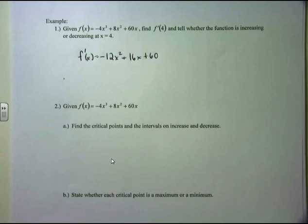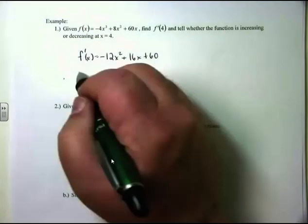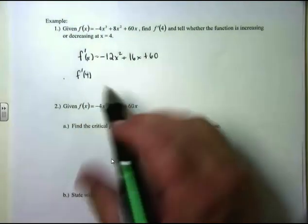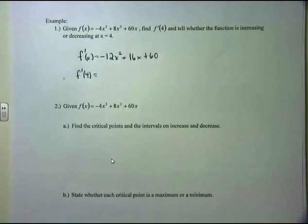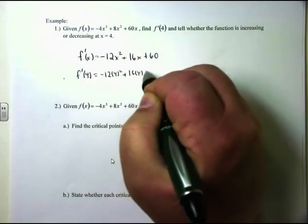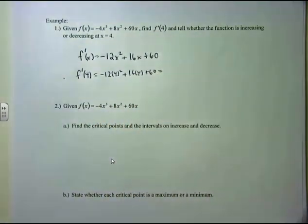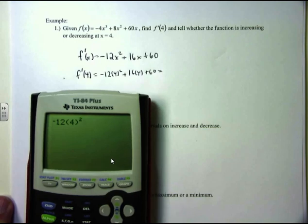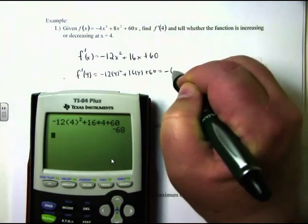There's my first derivative. They want me to calculate f'(4) — in other words, what's the slope of the tangent line when x = 4? This would be equal to -12 times 4 squared, plus 16 times 4, plus 60.